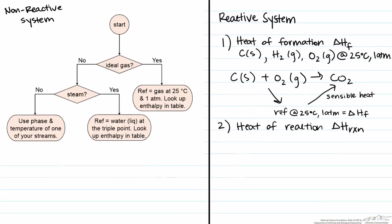However, if you use the heat of reaction method then our references have to be the molecular species again at 25 degrees C and 1 atmosphere. So for example the enthalpy of CO2 with these references at 25 degrees C and 1 atmosphere is zero and then to get your specific enthalpy is just going to be the sensible heat.